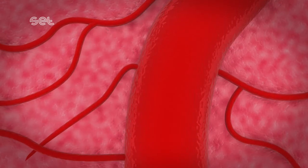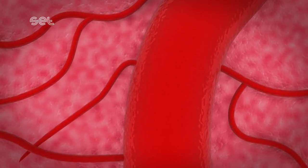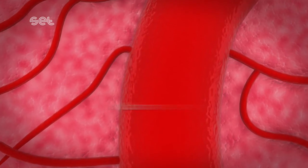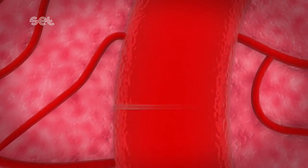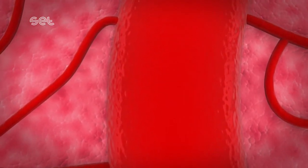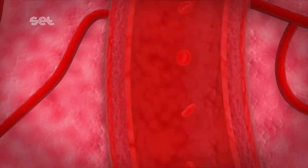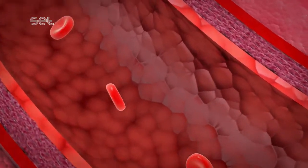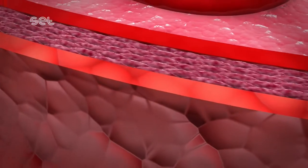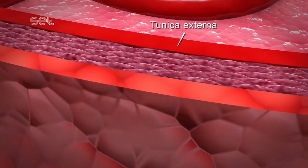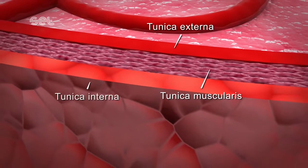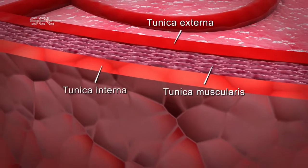Arteriosclerosis. There is an apparent coronary artery network in the human heart. On a zoomed view of one of the coronary arteries, three layers are seen. These are tunica externa on the outer, tunica muscularis in the middle, and tunica interna layer at the inner.